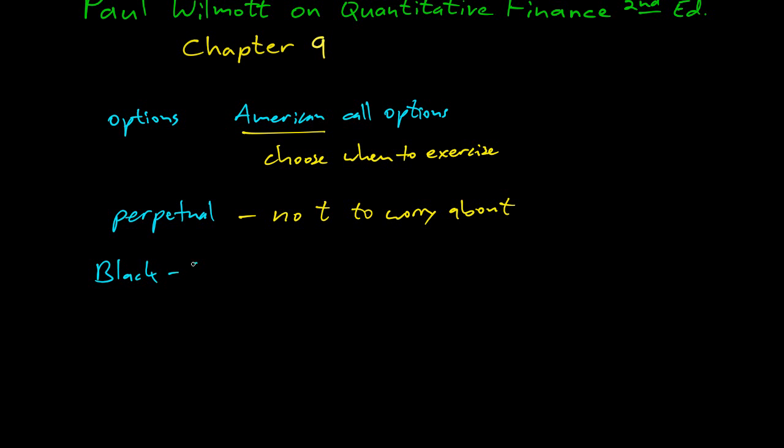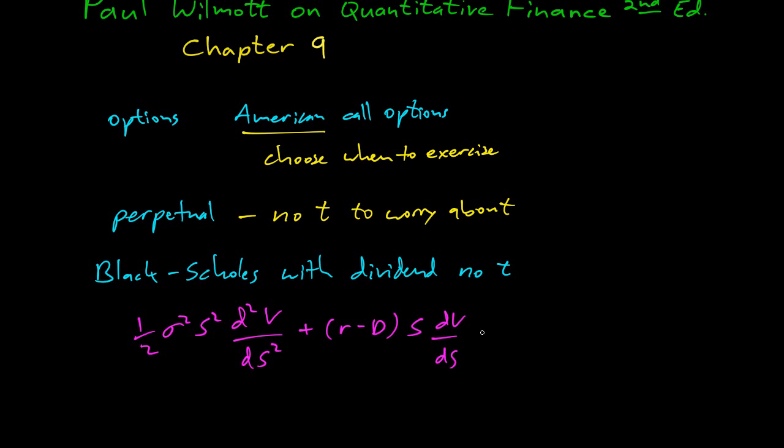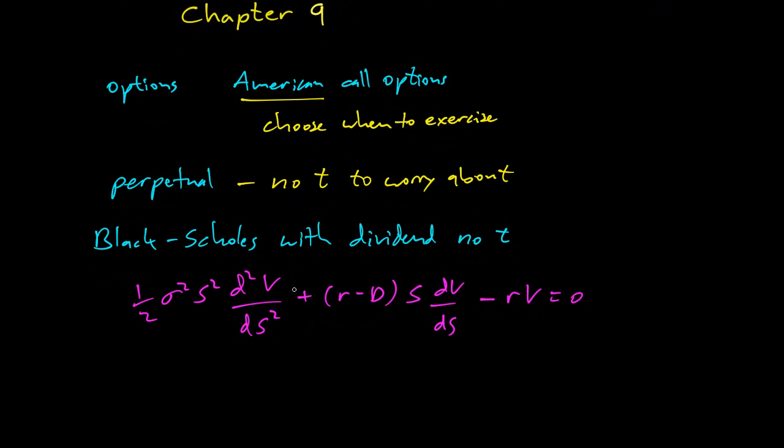All right, so let's start doing some math. So we have Black-Scholes with dividend and no time. So what's that going to be? It's going to be half sigma squared s squared second derivative v with s plus r minus d s dv ds minus rv equals zero. So this is just Black-Scholes with dividends. So here's the dividend. And we have regular derivatives because we have v is just a function of s. There's no time.